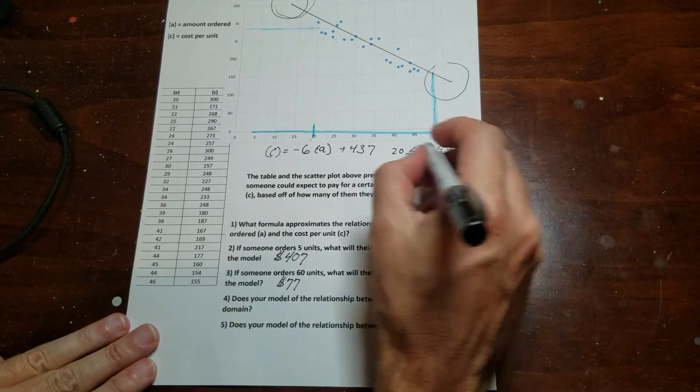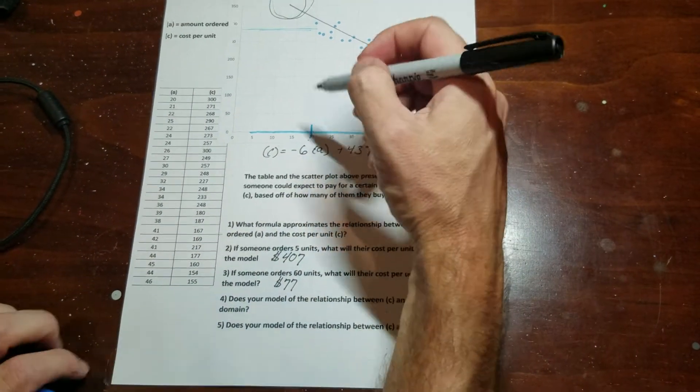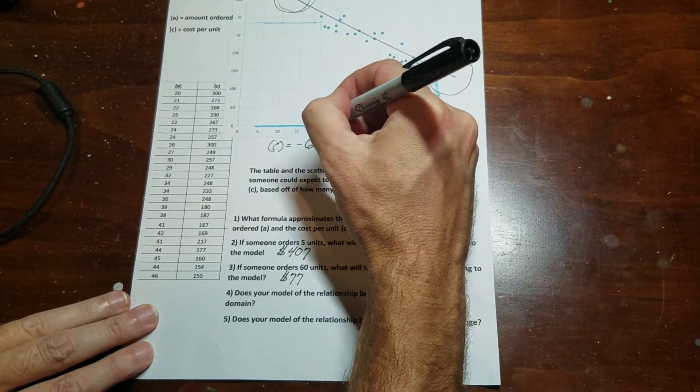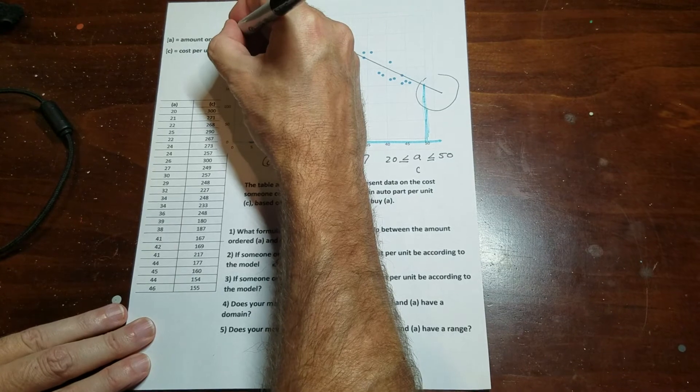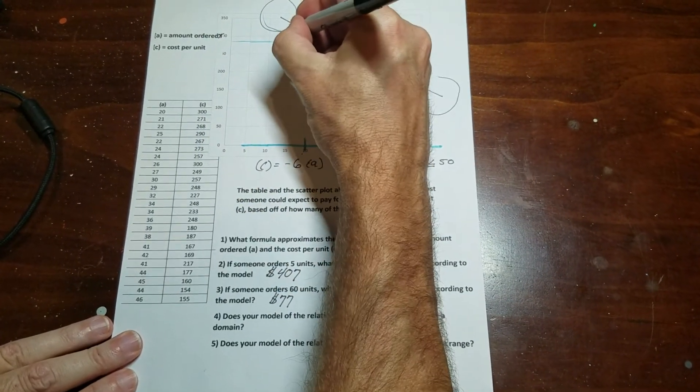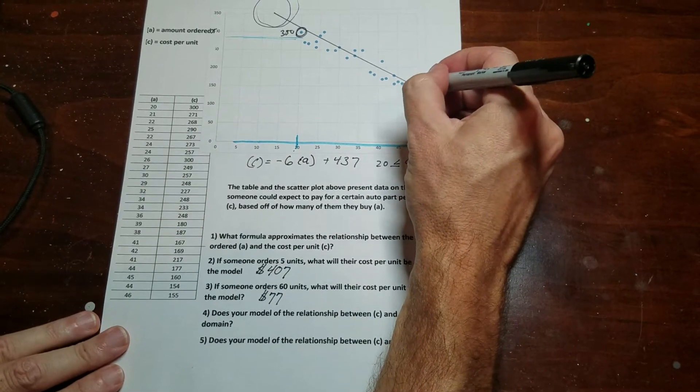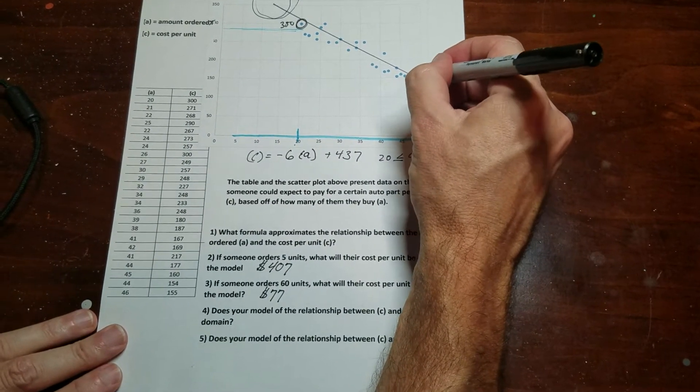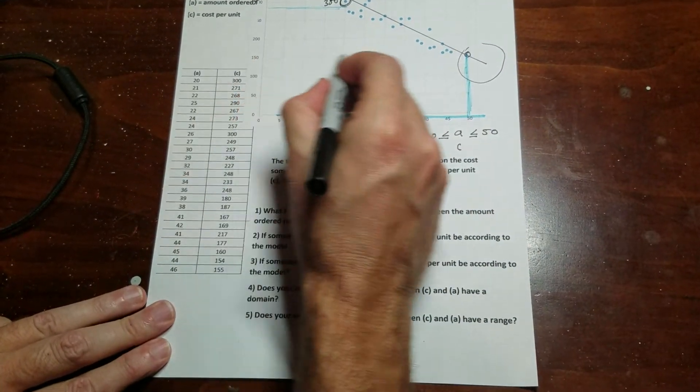And now let's talk about the range, which in this case would be C. So here you can see that at 20, it looks like it's at 350. So the highest point is 350. And since I called it here at 50, it looks like it's at about 150 if I follow this all the way across.